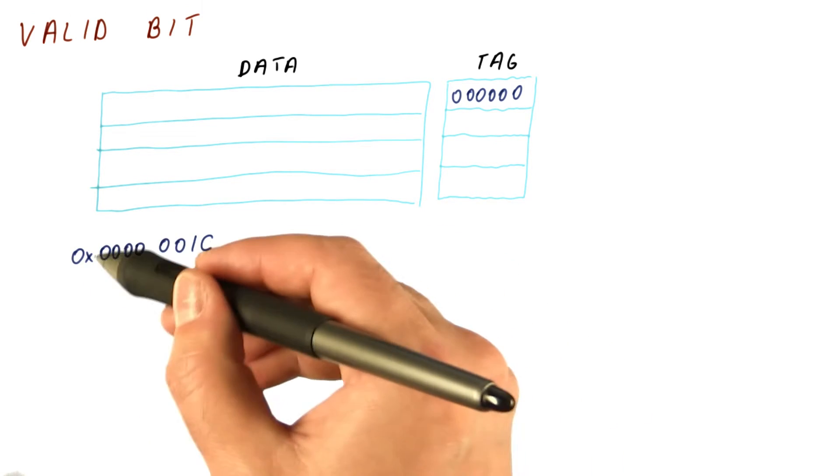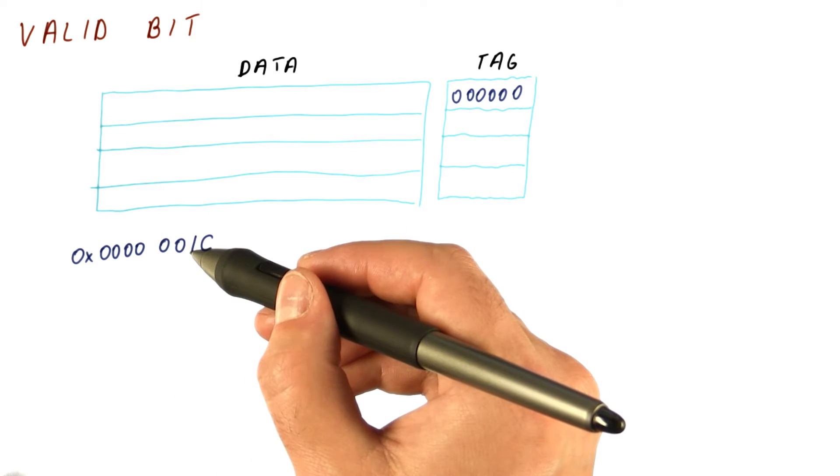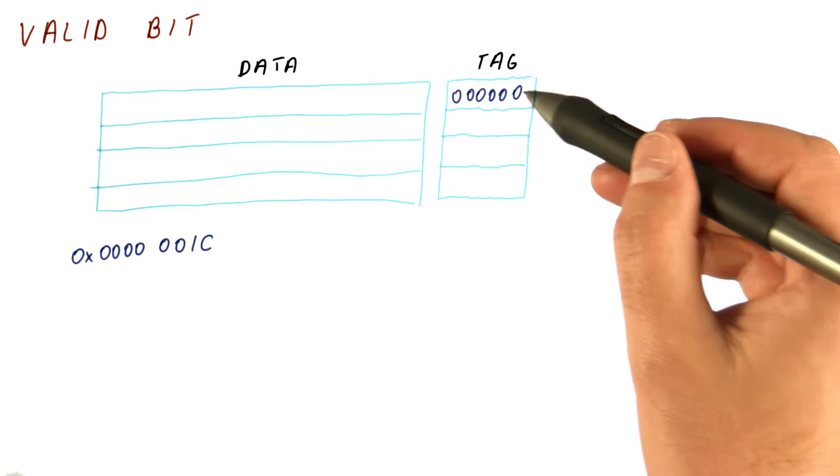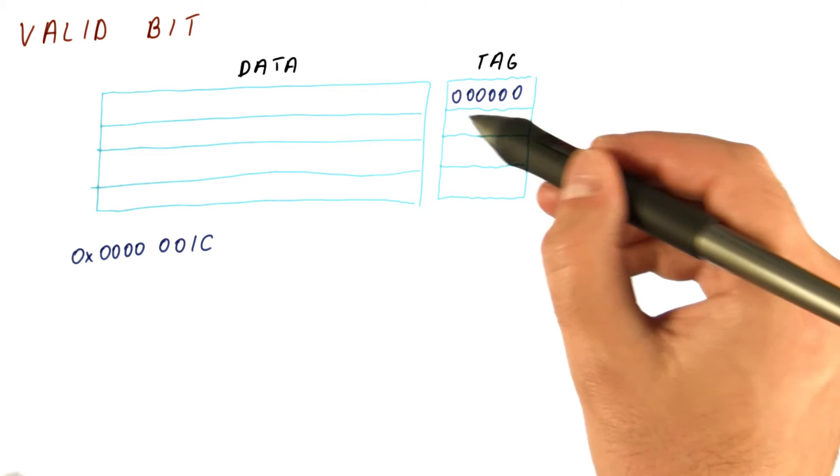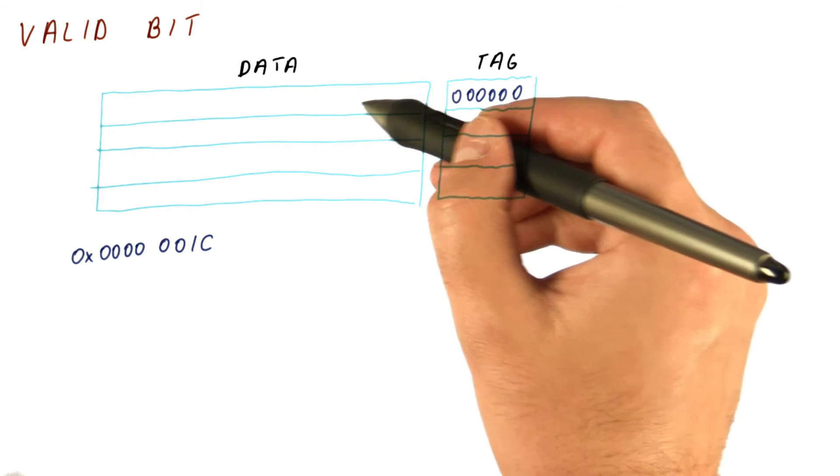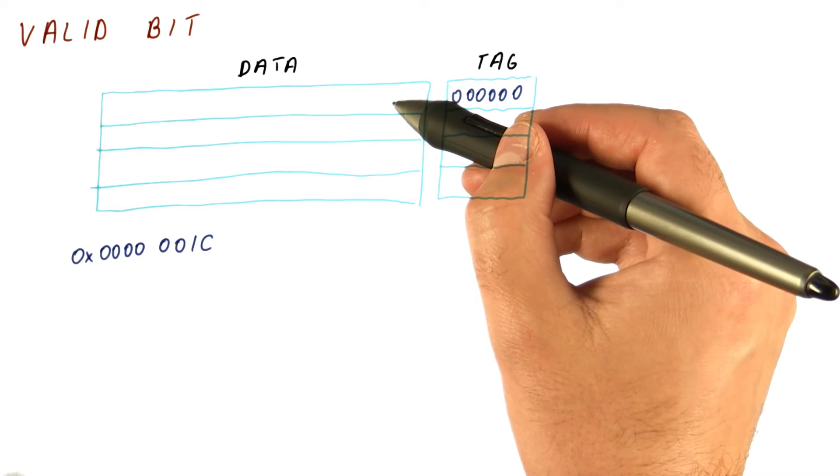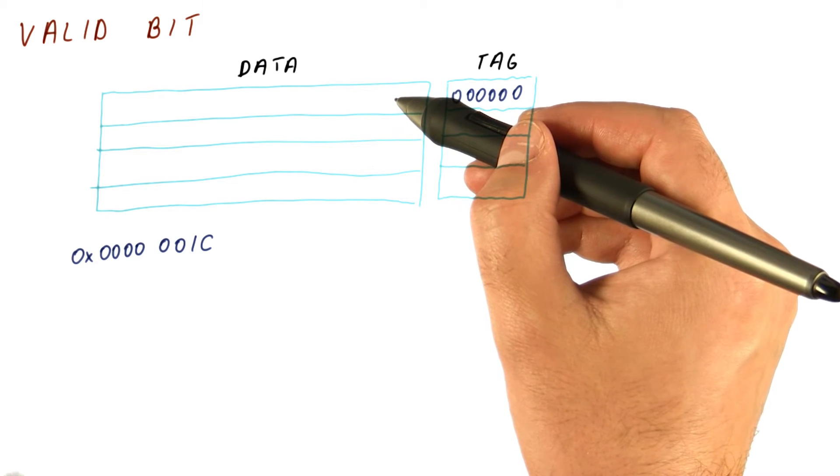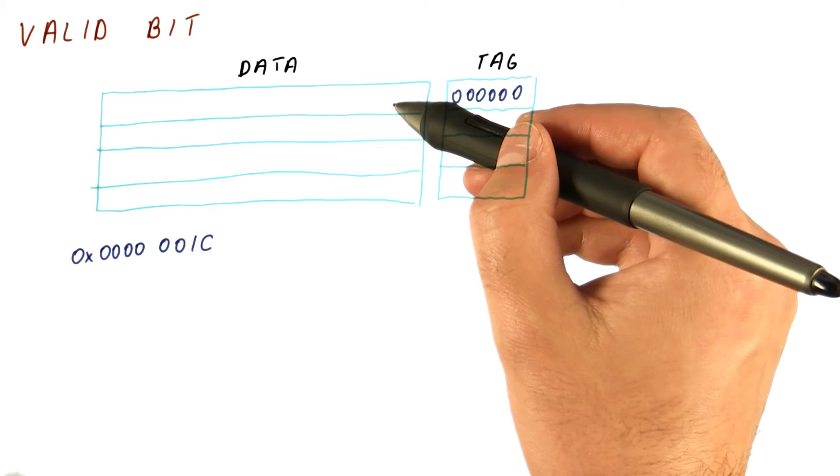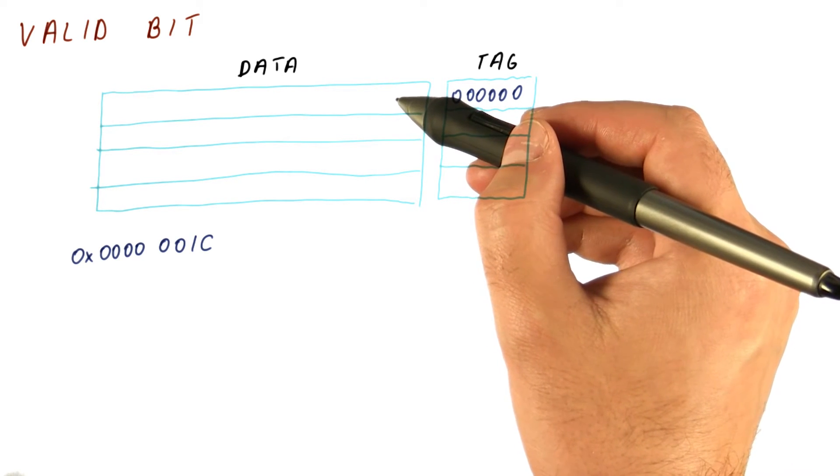It might happen that this address actually has tag bits that correspond to zero. In that case, the initial tag would match this, and we would be accessing garbage data in the cache which hasn't been brought from memory, so we're really accessing something that is not equal to what we should be accessing.